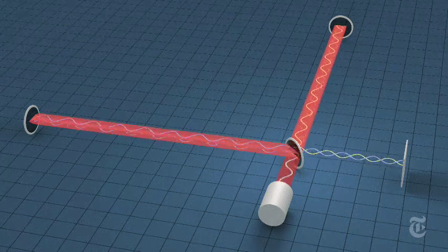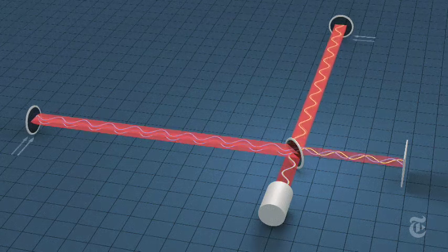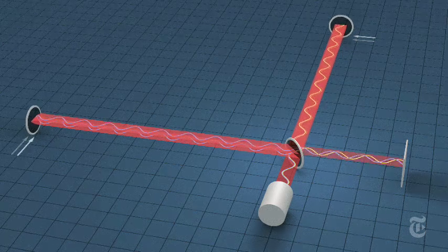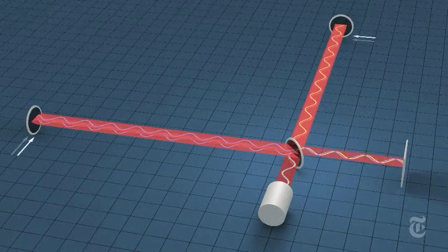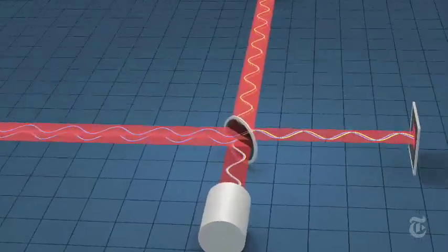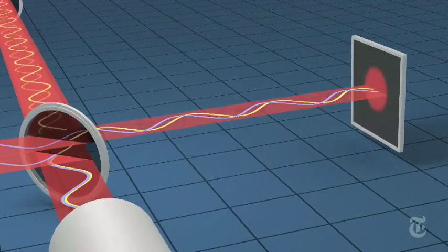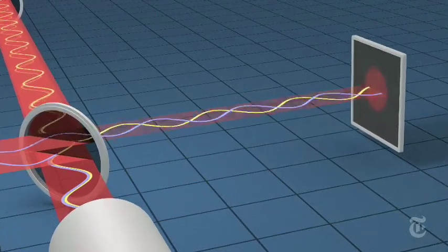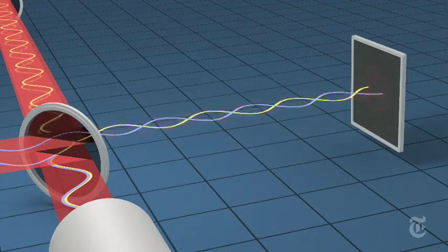But a passing gravitational wave would stretch one arm and squeeze the other. The resulting discrepancy is tiny, a fraction of the width of a proton, but enough to misalign the beams and light up the detector in a rhythmic pattern.